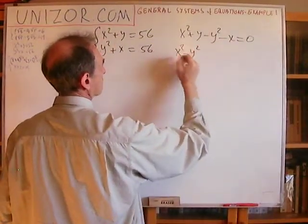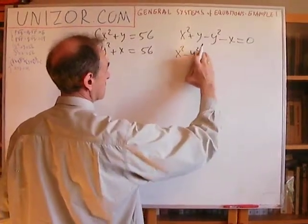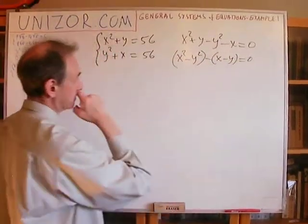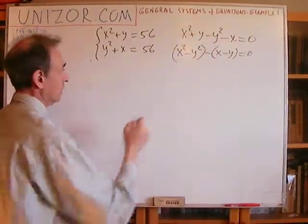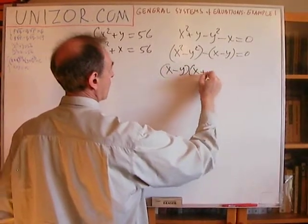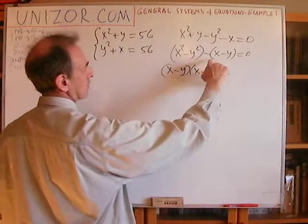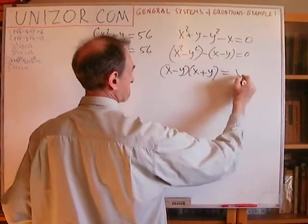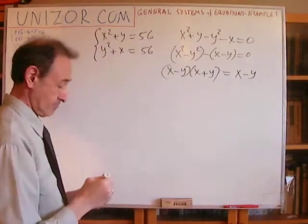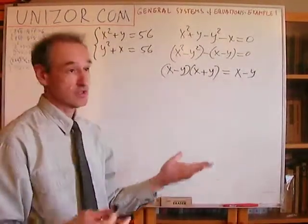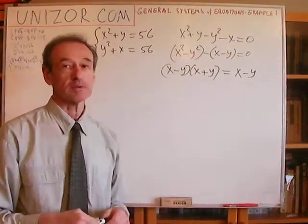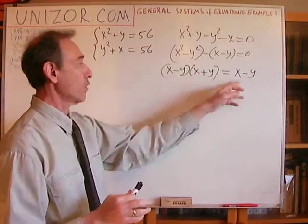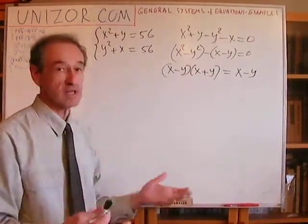Rearranging: X squared minus Y squared minus (X minus Y) equals zero. Since X squared minus Y squared equals (X minus Y)(X plus Y), we get (X minus Y)(X plus Y) minus (X minus Y) equals zero, which factors as (X minus Y)(X plus Y minus 1) equals zero. So either X minus Y equals zero — meaning X equals Y — or X plus Y equals 1. Let's check the X equals Y case.